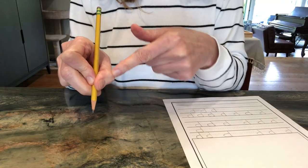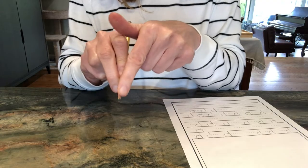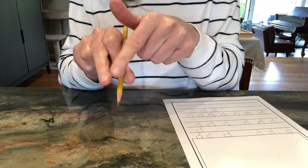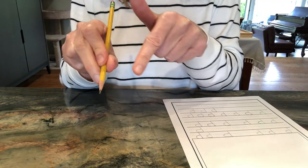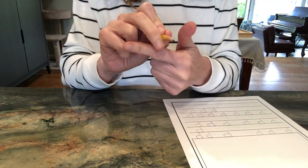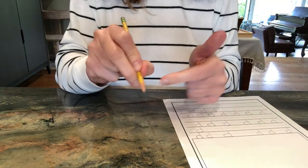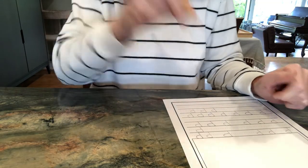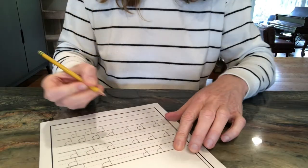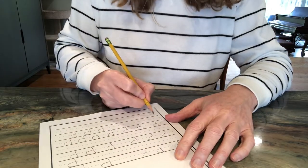My thumb is bent, pointer points to the tip. Tall man uses his side. I tuck my last two fingers in and I take my pencil for a ride. I'm holding it just right and not too tight.